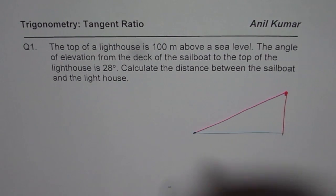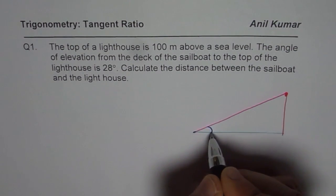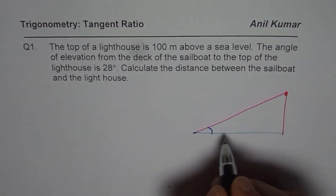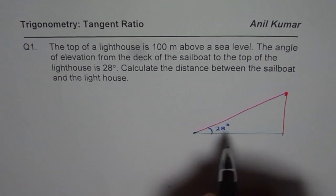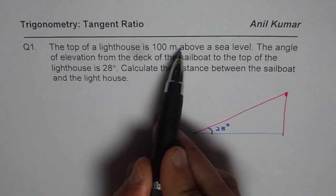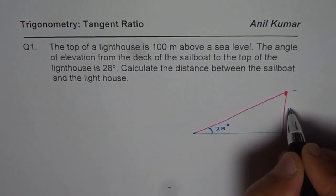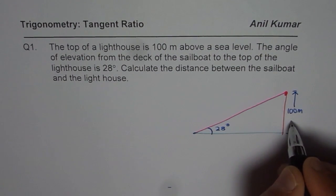So let me make that the checkpoint. The angle of elevation is the line of sight which is along this line and the horizontal. So it is 28 degrees. That is the angle of elevation. What we are given here is that the top of the lighthouse is 100 meters above the sea level. So this height is 100 meters.